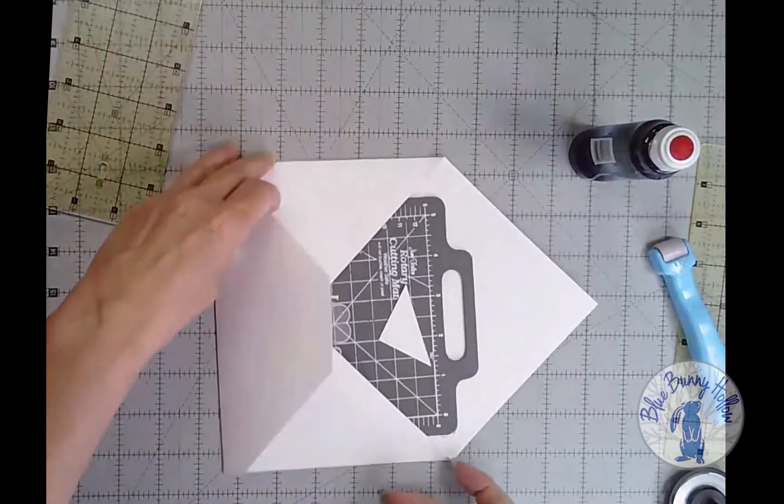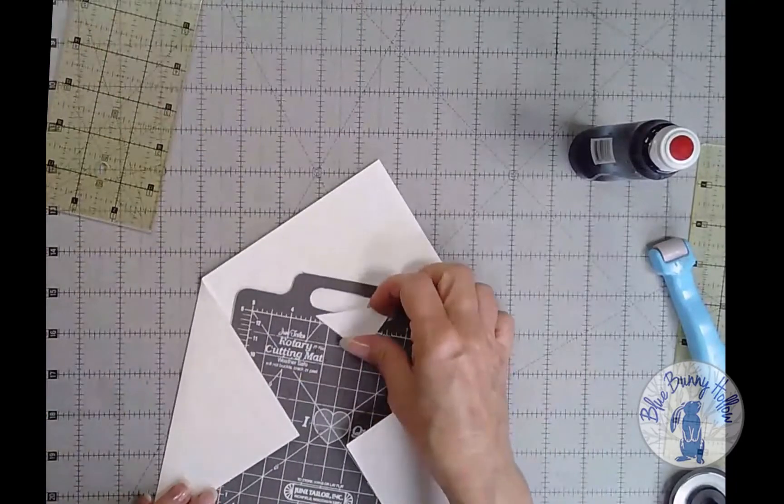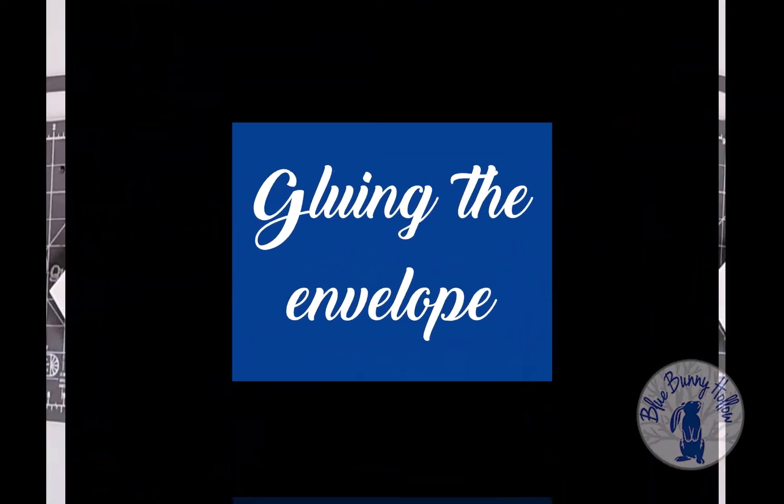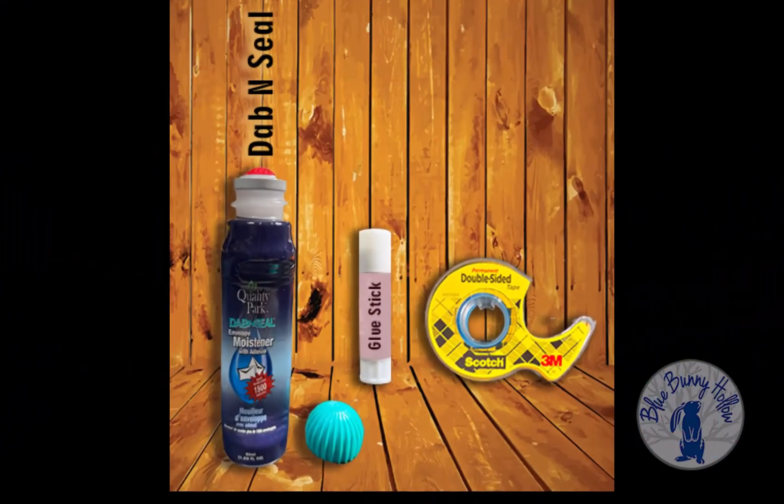Then I like to leave the mat in there so when I glue the bottom of the card, I don't accidentally glue the envelope together. You can use a glue stick, double-sided tape, or dab and seal envelope moistener and adhesive.